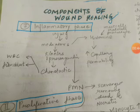Histamine is secreted by the mast cells, the platelets, and the granulocytes. What happens with histamines is that it increases capillary permeability. Then kinins and prostaglandins are released; they are chemotactic in nature — chemotactic to WBCs and fibroblasts.